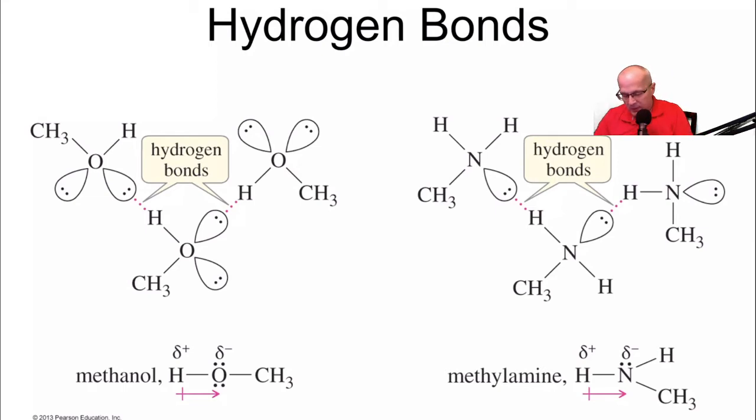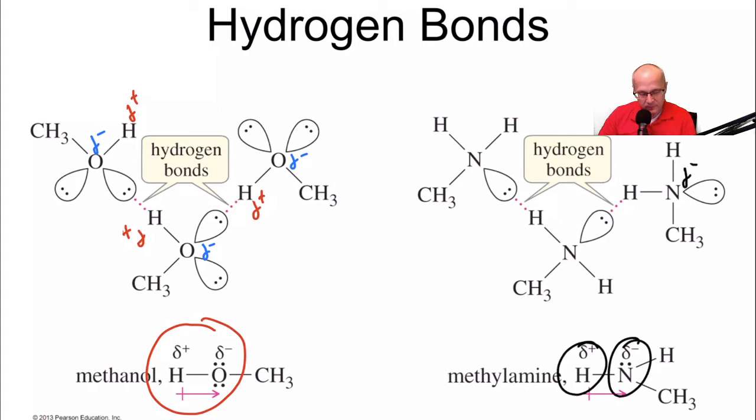So here we have methanol. Notice here the hydrogens are delta positive. The hydrogens on the oxygens, I should say, are delta positive. The oxygens are delta negative. Now let's look at the methylamine. Again, the hydrogens are delta positive. The nitrogen is delta negative. And delta positive. So these things are all hydrogen bonding together, and that is a stabilizing effect. But this is a type of dipole-dipole interaction, but it's very specific in that it involves hydrogen and oxygen or hydrogen and nitrogen.